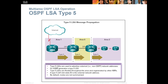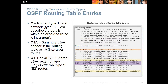Type 5 LSAs are used to advertise external network addresses. The ASBR generates Type 5 LSAs. Type 5 are flooded throughout the network and regenerated by all the appropriate ABRs. The Type 5 link-state ID is the external network address, and it is not summarized by default.